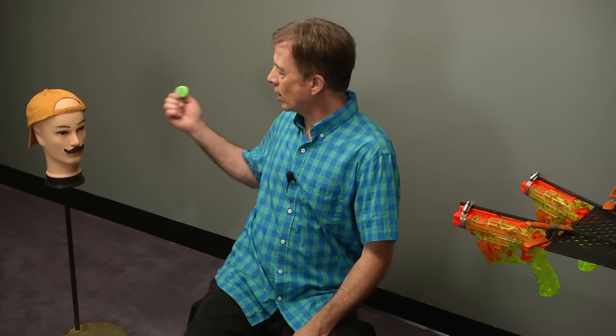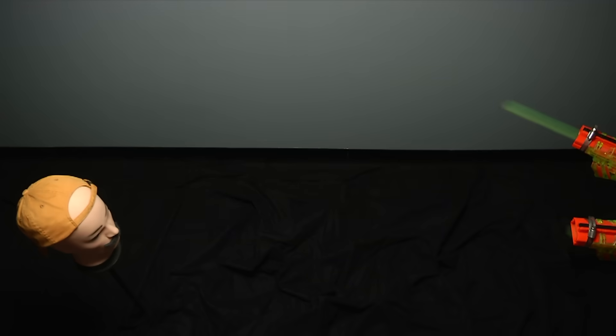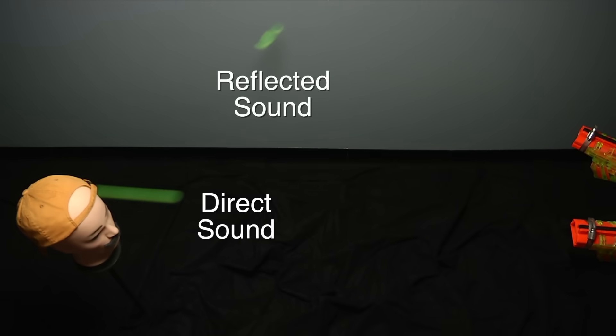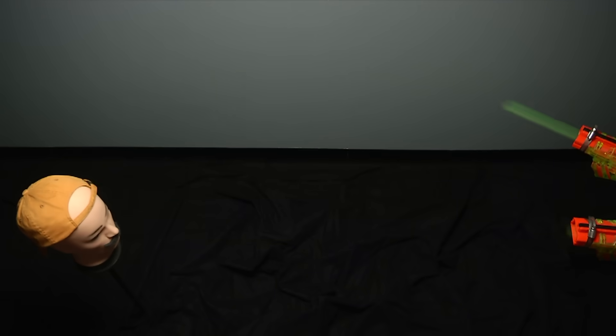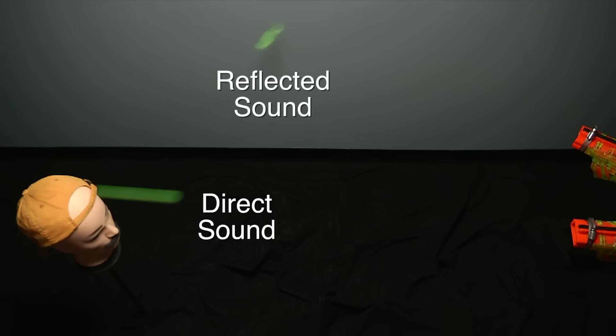I've got this one aimed so that disc bounces off the wall, and it represents reflected sound. I'll shoot them both at the same time. Reflected sound arrives at our ears later than direct sound, even though it started out at the same time, because it's traveling farther.